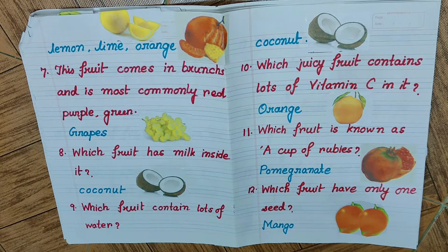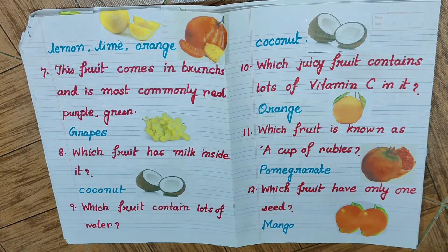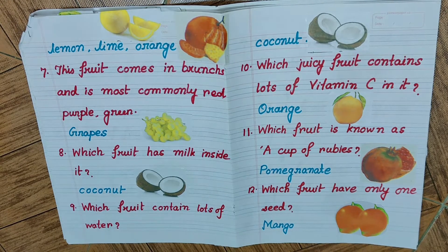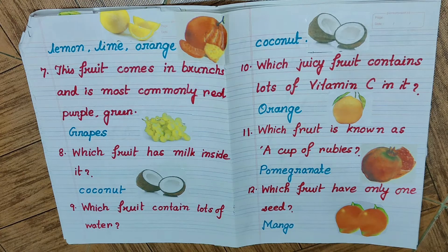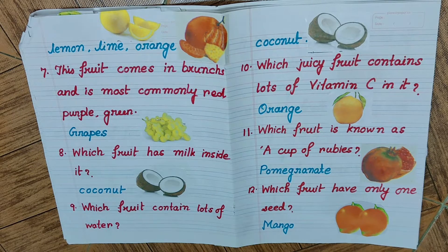Question number seven: this fruit comes in a bunch and is most commonly red, purple, or green in color. We are talking about grapes. Grapes come in three color varieties — red, purple, and green — the most common being green. Question number eight: which fruit has milk inside it? The answer is coconut.